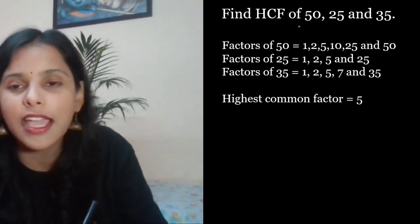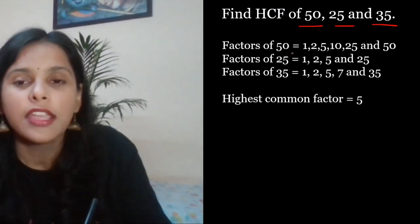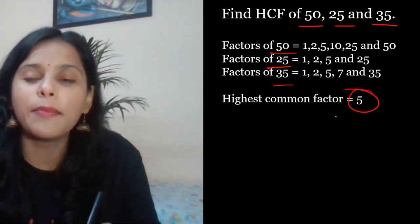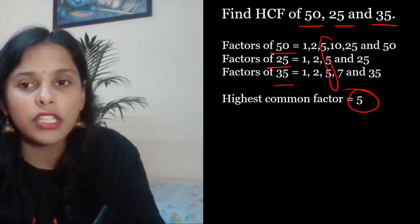50, 25, 35 - be eek kor example leke samjha rheu. 50 ke factor liko, 25 ke factor liko, 35 ke factor liko. Likh liye. Common factor yahaan pe jho milega, usme sabse highest kone hai - mujhe dikh rah hai 5 is the highest one. 5 is the HCF.